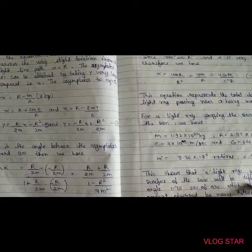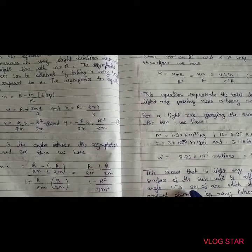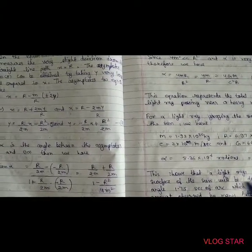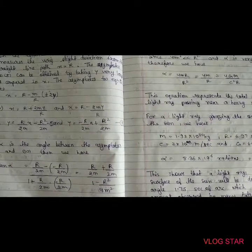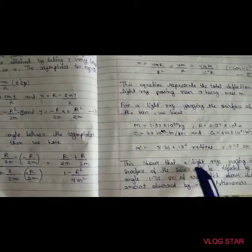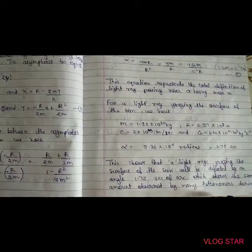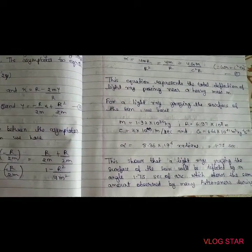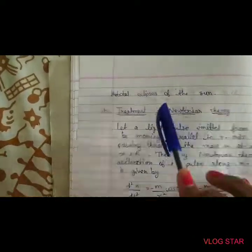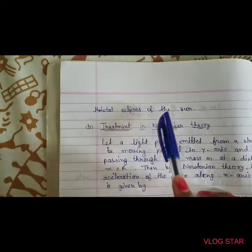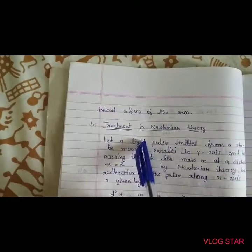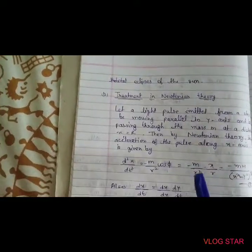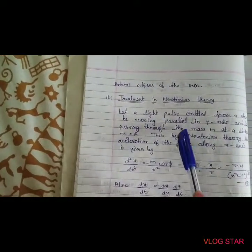This equals approximately 1.75 arc seconds. This shows that a light ray grazing the surface of the sun will be deflected by an angle of 1.75 seconds, which matches the amount observed by astronomers during the total eclipse of the sun.